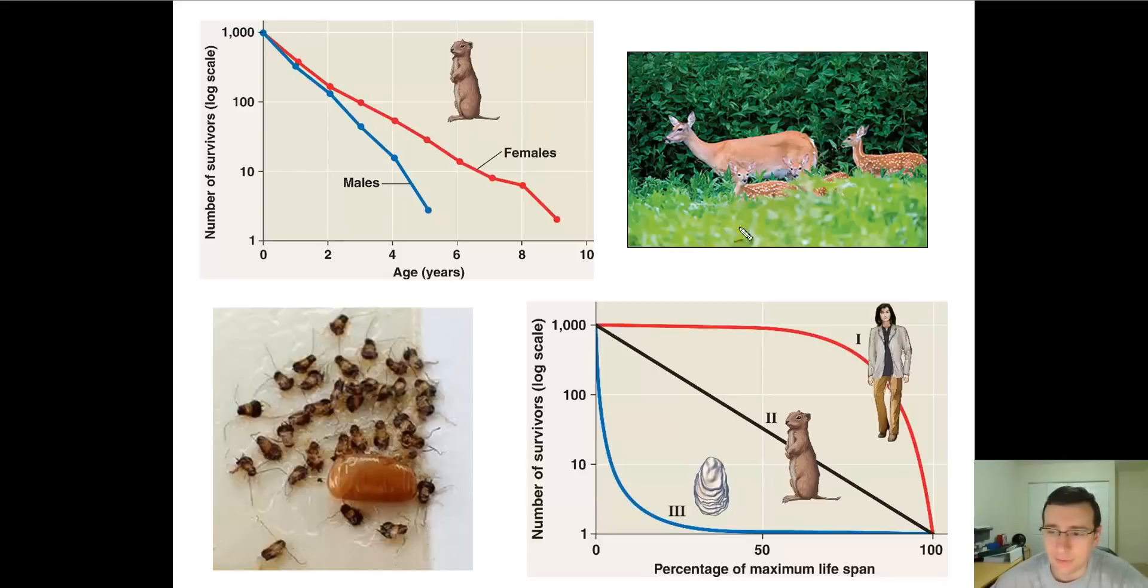Now, if you look at the survival rates of organisms in general, you'll see three different patterns of their lifespan. Humans, for example, live very long lives and they tend to die at the end of their lives. So at the beginning of their lives, very few of us will die.